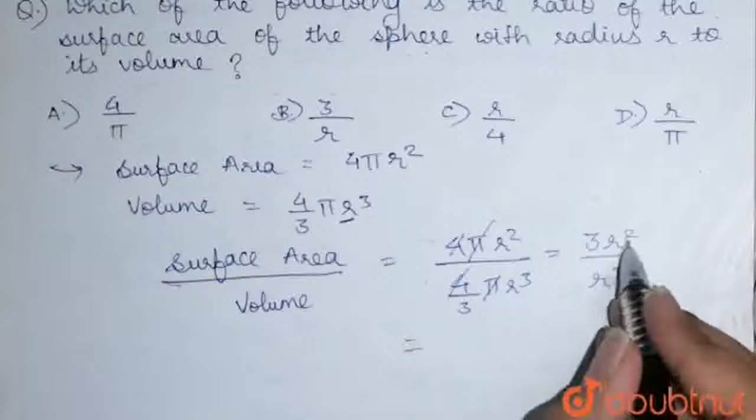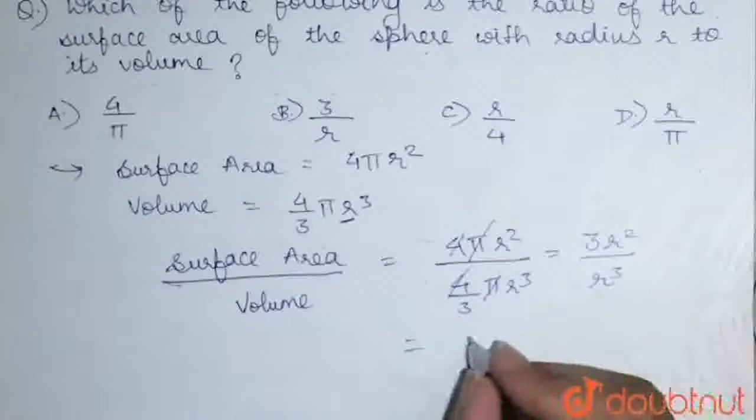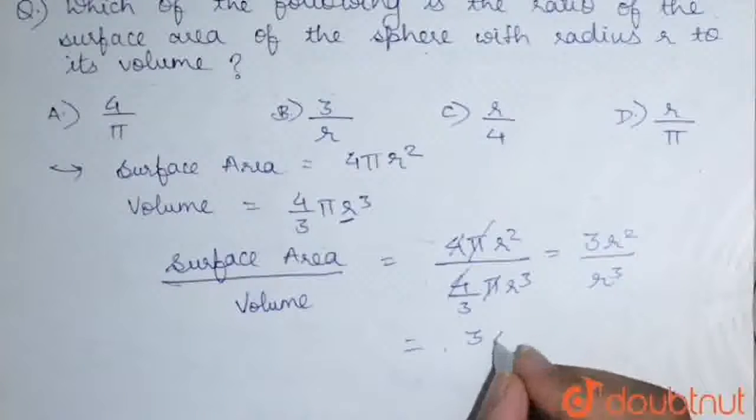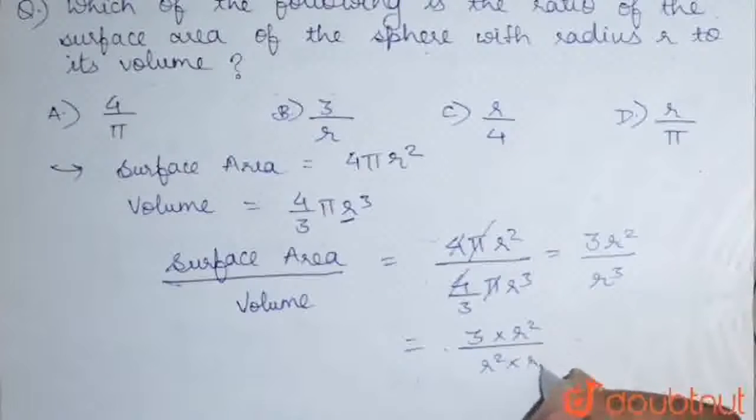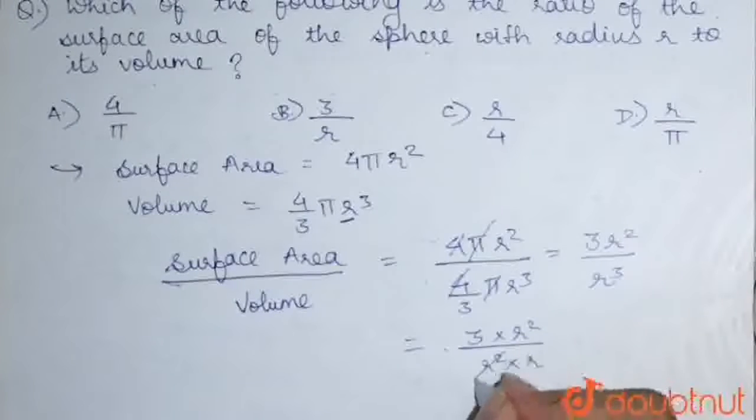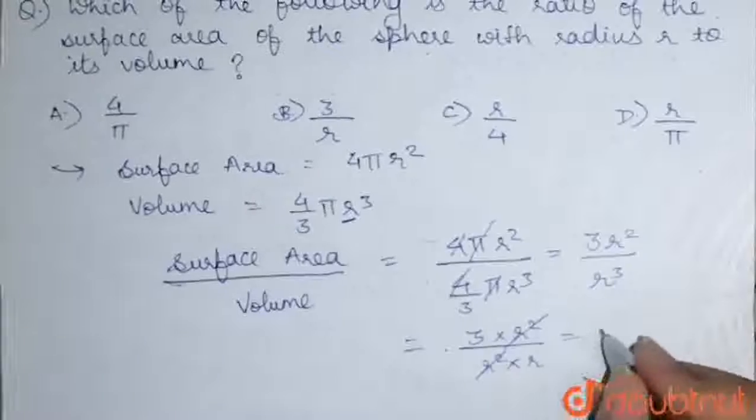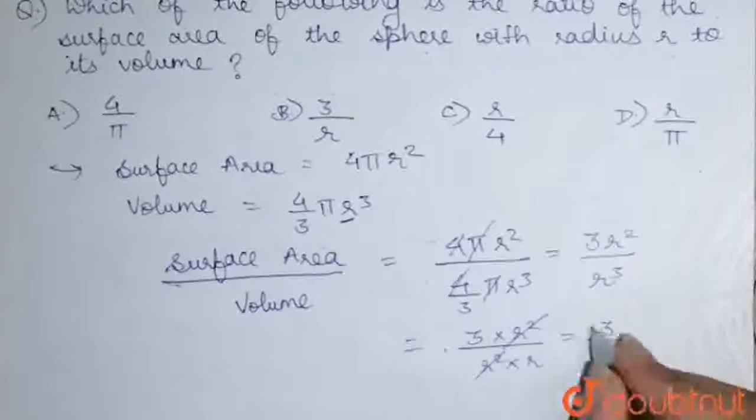Now, this r cube can also be separated here. That is 3 into r square upon r square into r. This r cube will be written like this. So, r square will also cancel out. We remain with 3 by r.